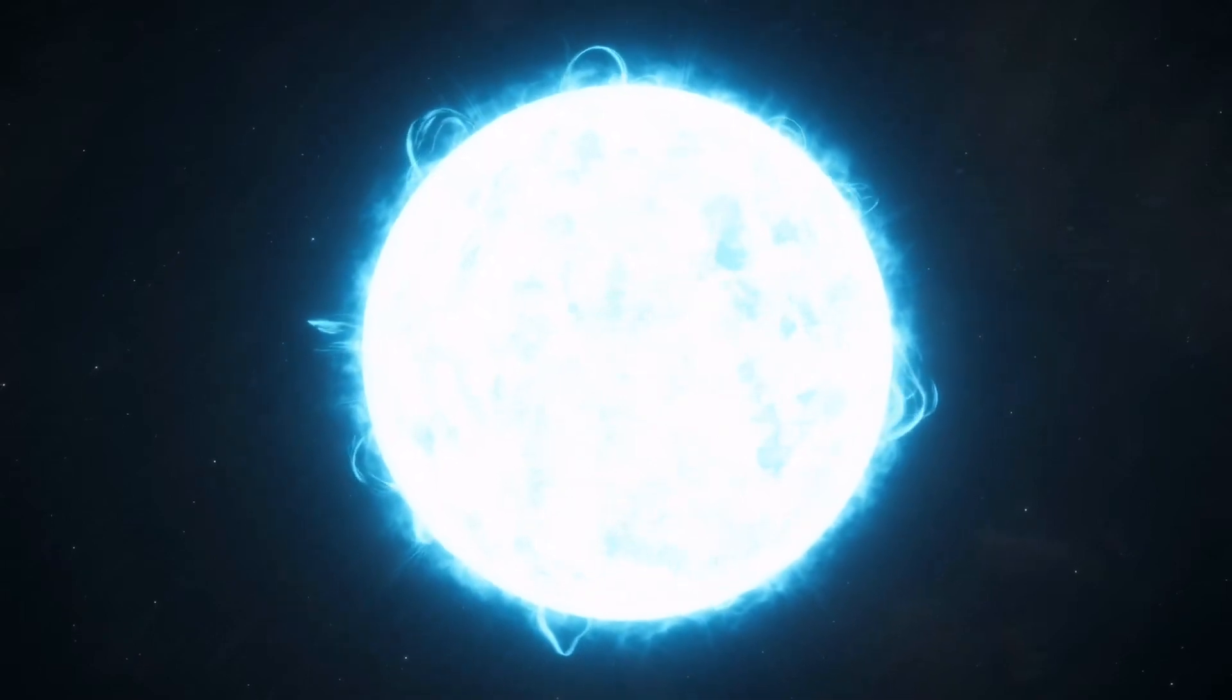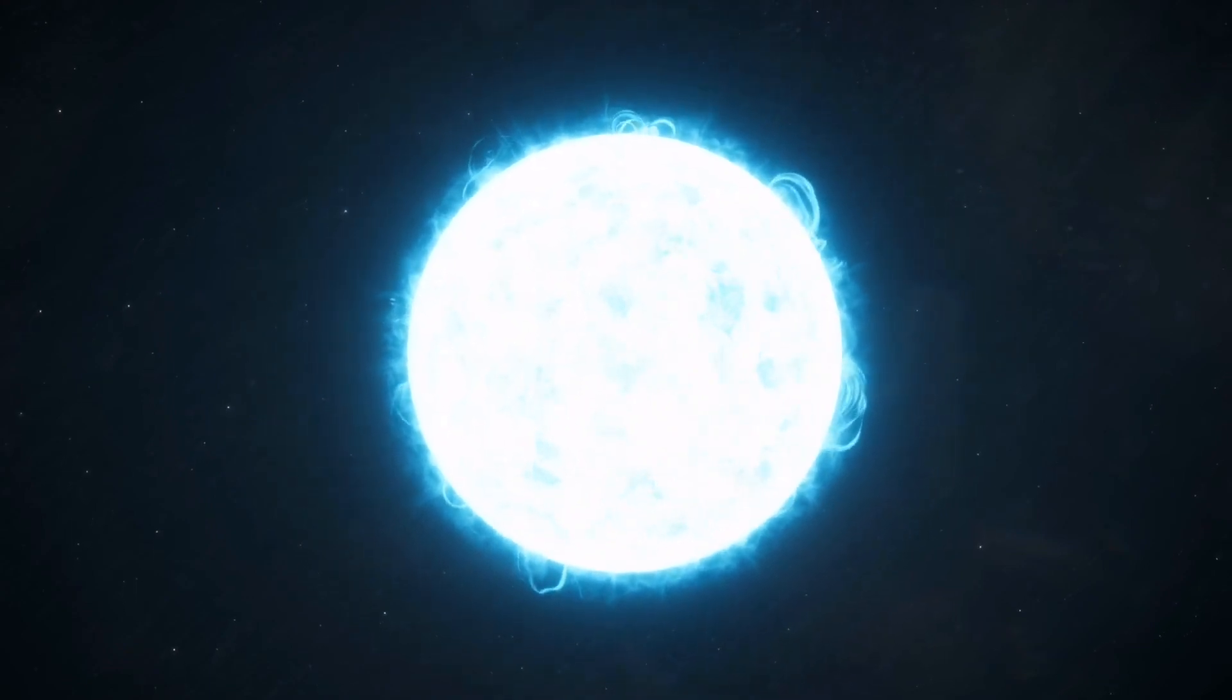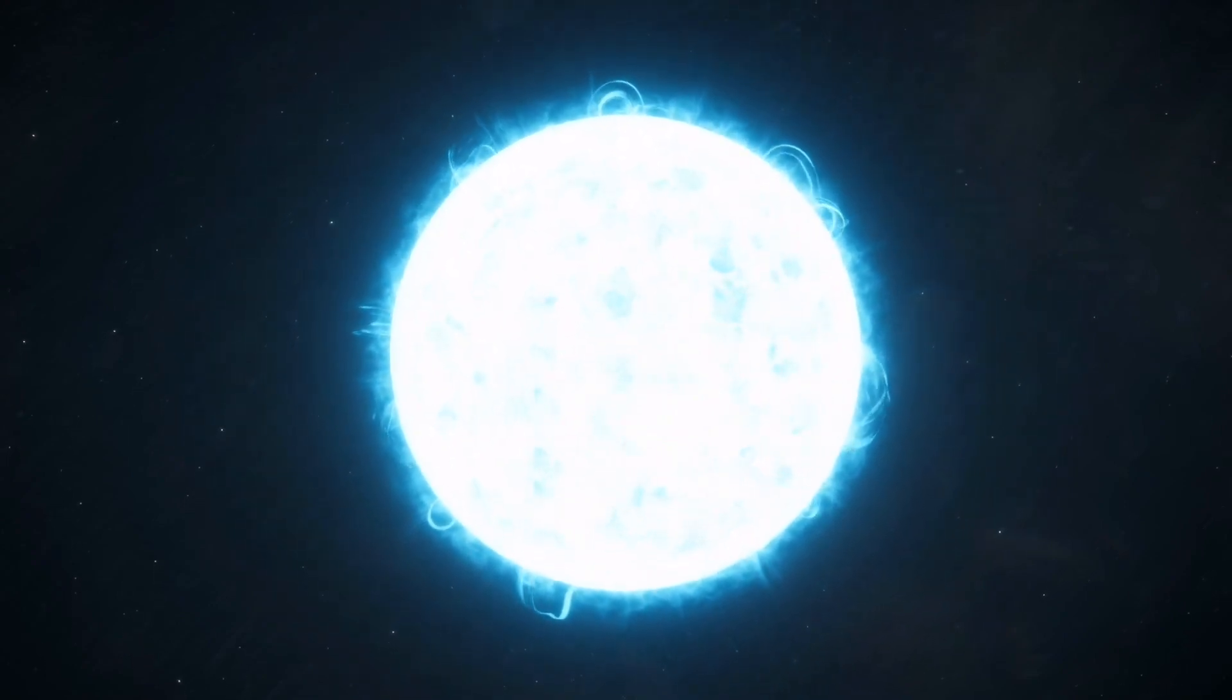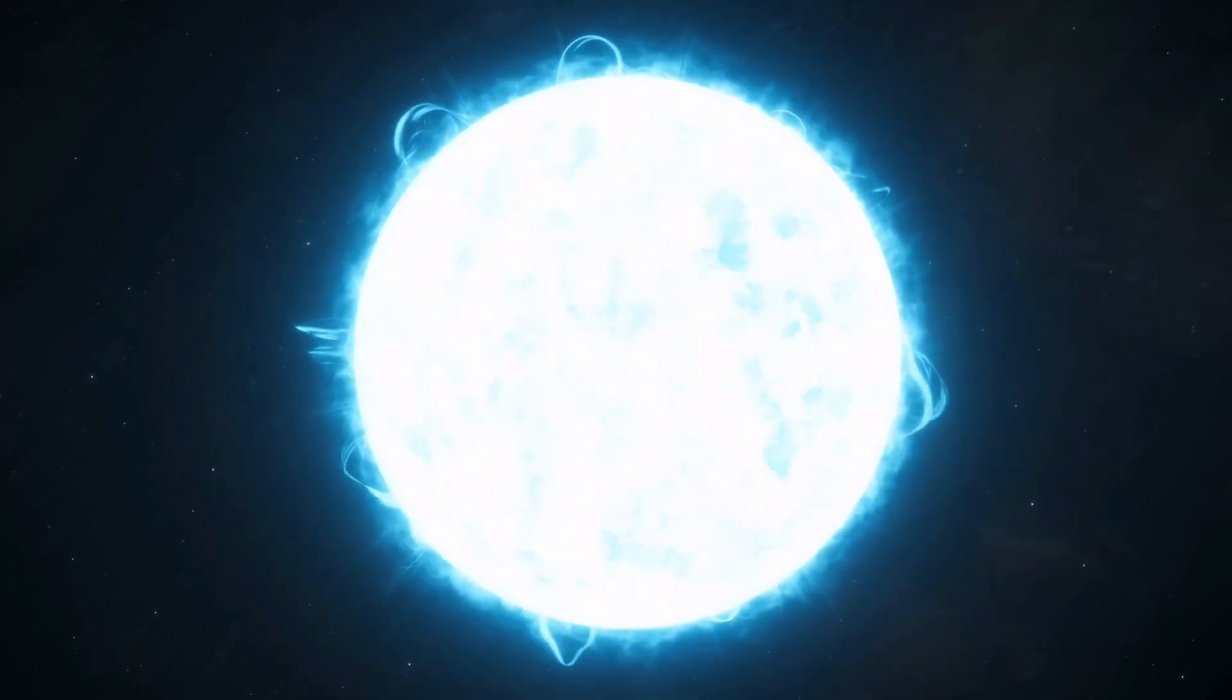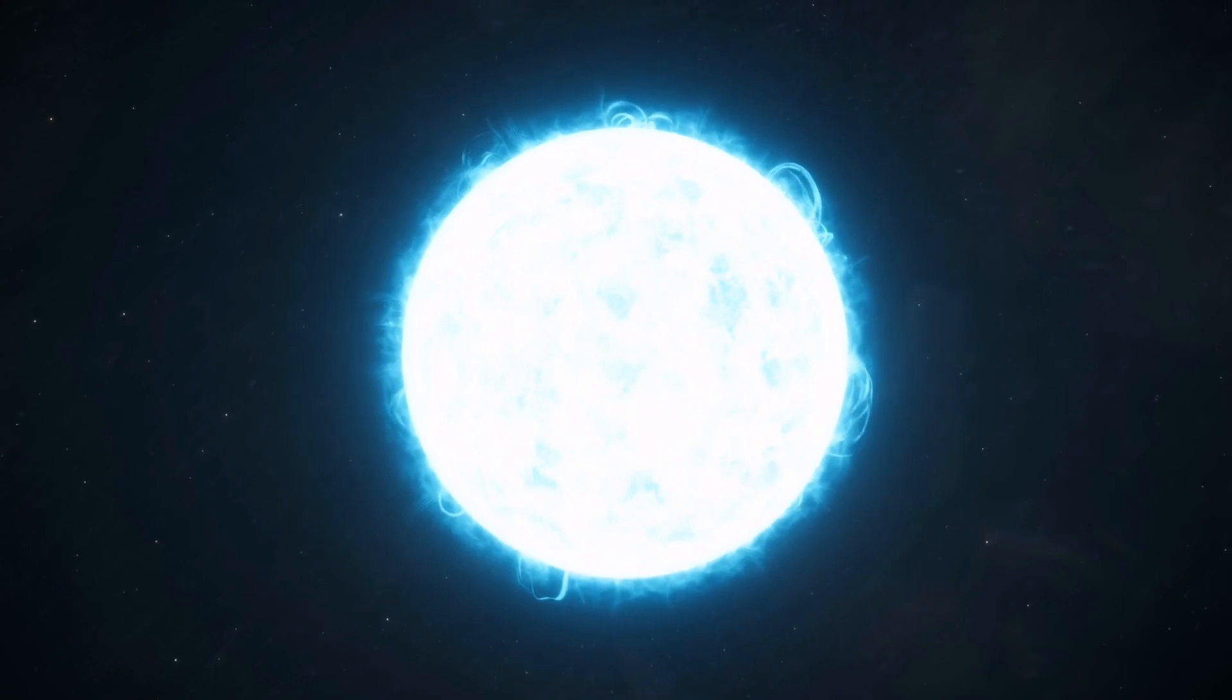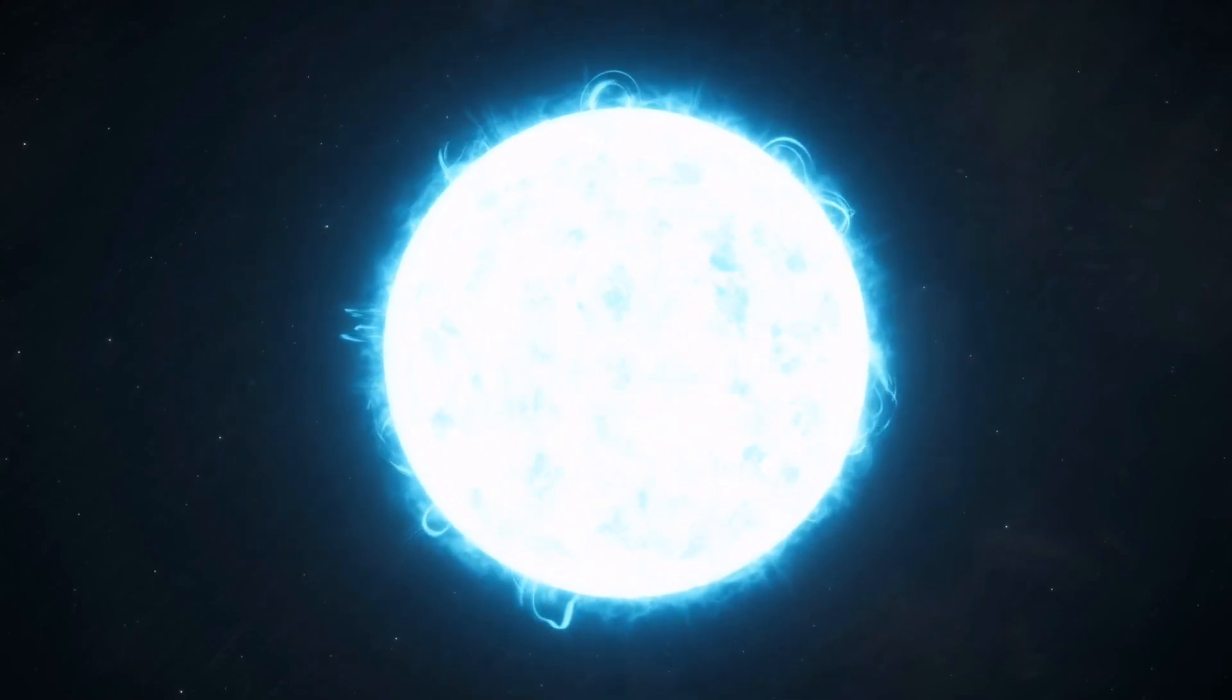Blue hypergiant. Blue hypergiants are extremely rare and among the most massive stars in the universe. They are even larger and hotter than blue supergiants. Blue hypergiants have a very high surface temperature which gives them the blue color. They are highly luminous and emit thousands to millions of times more energy than the sun. Blue hypergiants have a relatively short lifespan and end their lives in a supernova explosion.